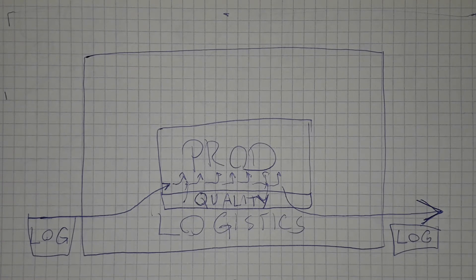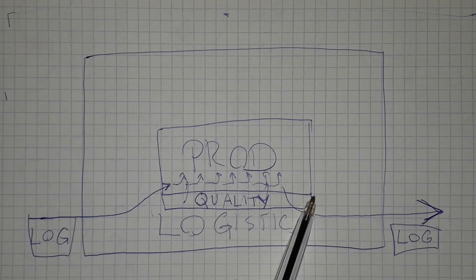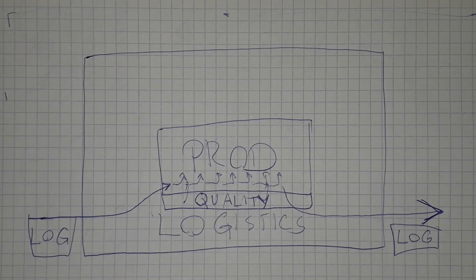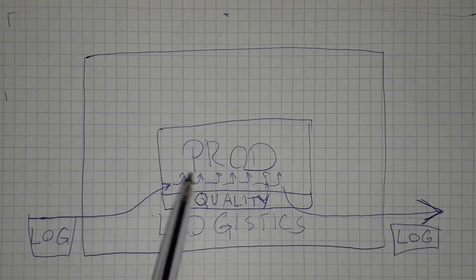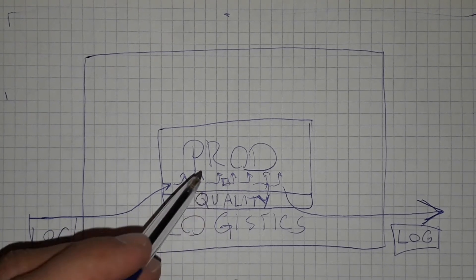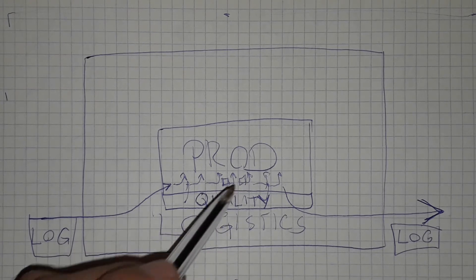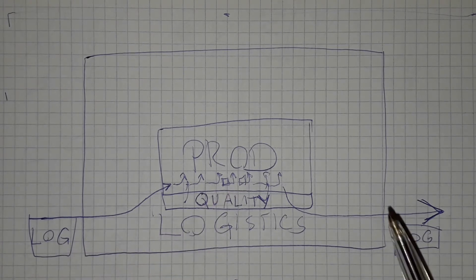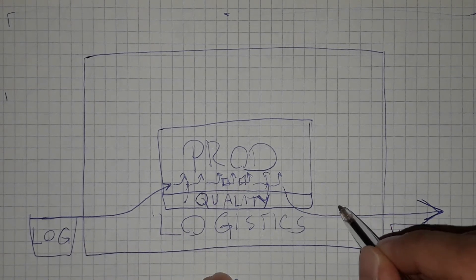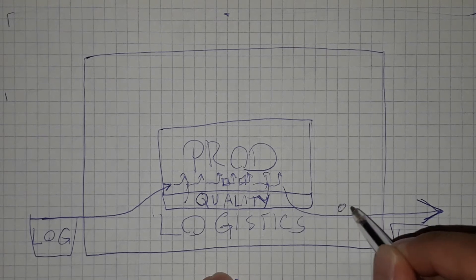So the quality department in the production line controls the parts that are, for example, between the stations, between the workstations. Then we will have the quality which is controlling the final product, let it be the car.